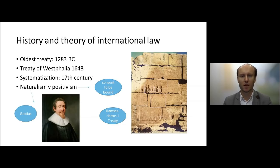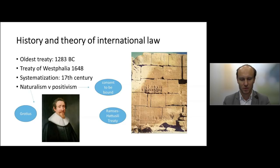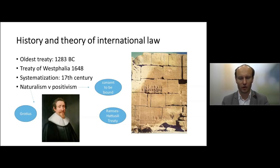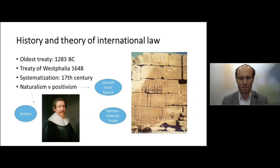A few words about the history and theory of international law. International law is a rather old branch of the law. The oldest treaty was arguably concluded in 1283 before Christ — a treaty between Egypt and the Hittites. Ramses had to see the treaty; you can see the inscriptions there on the stones. When we talk about modern international law, the main date is 1648 — the birth of modern international law, the Treaty of Westphalia, which carved up Europe into independent states with full internal and external sovereignty. This is seen as the birth date of the current system of international law, a system based on states.